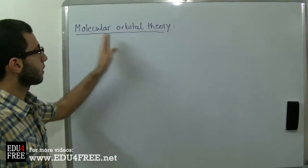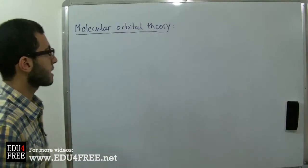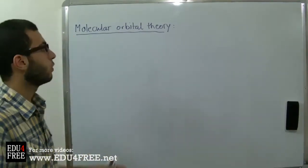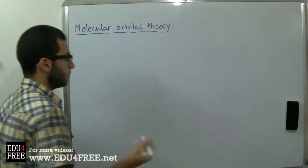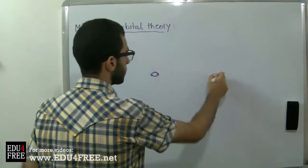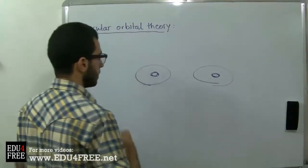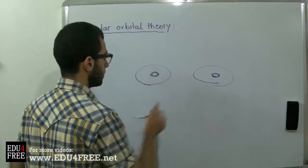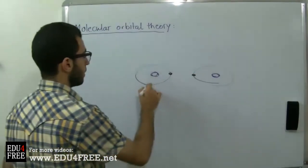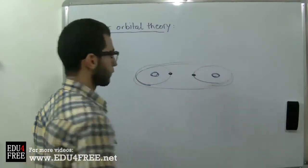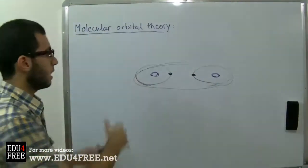Today we are going to talk about the molecular orbital theory. Previously we talked about the valence bond theory. The difference between the two theories is how each one regards the new formed molecule after the formation of covalent bonds. The valence bond theory says that there are two atoms, each needing one electron to be energy stable, like the hydrogen atom, where a bigger orbital is formed where the two electrons are shared and the two nuclei are found in the middle forming a new molecule.